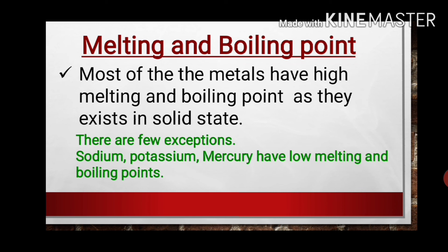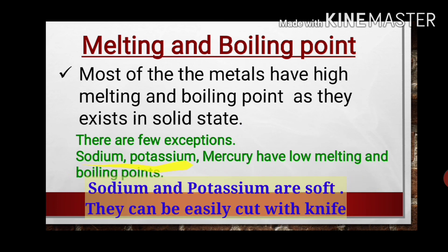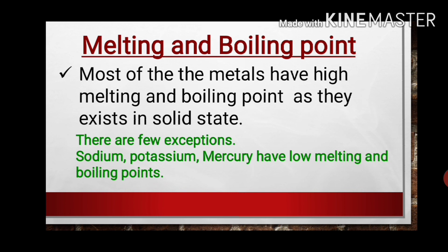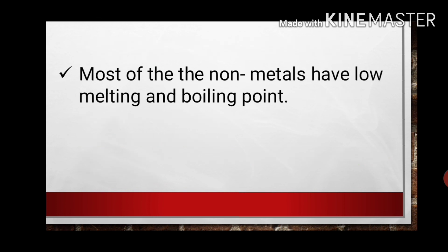The next physical property is melting and boiling point. Most metals have a high melting and boiling point because they exist in the solid state with particles that are very compact and tightly packed. However, there are exceptions — sodium, potassium, and mercury have low melting and boiling points compared to other metals. Whereas non-metals usually have low melting and boiling points.